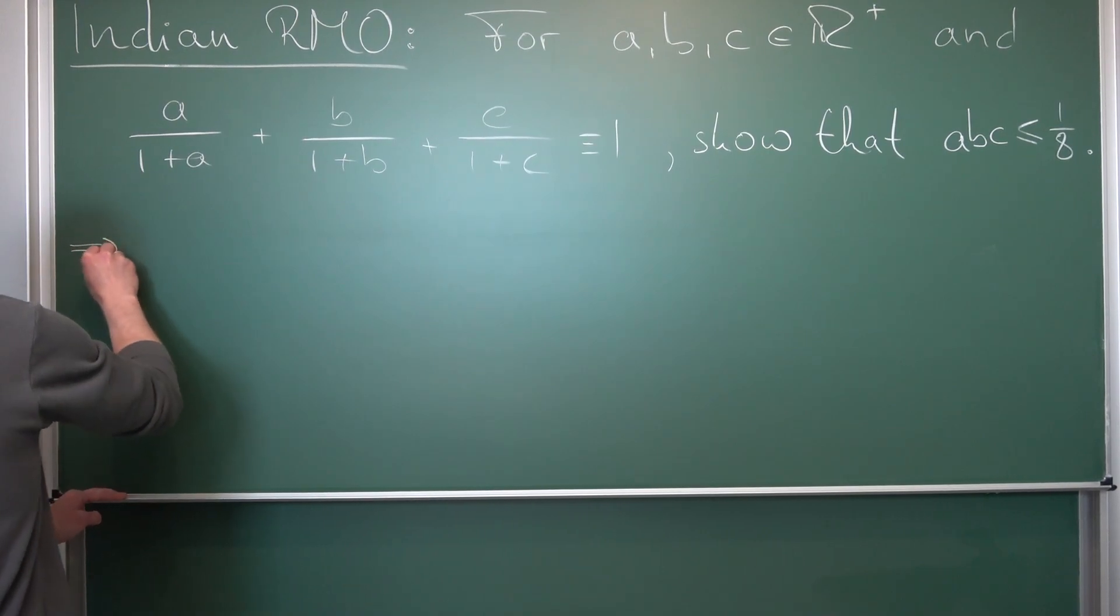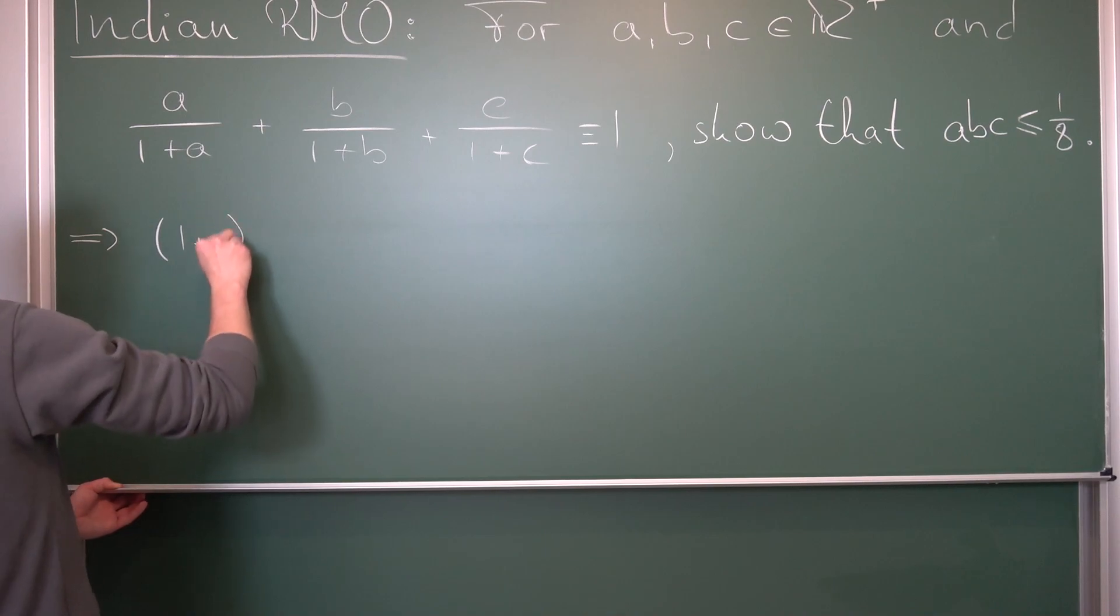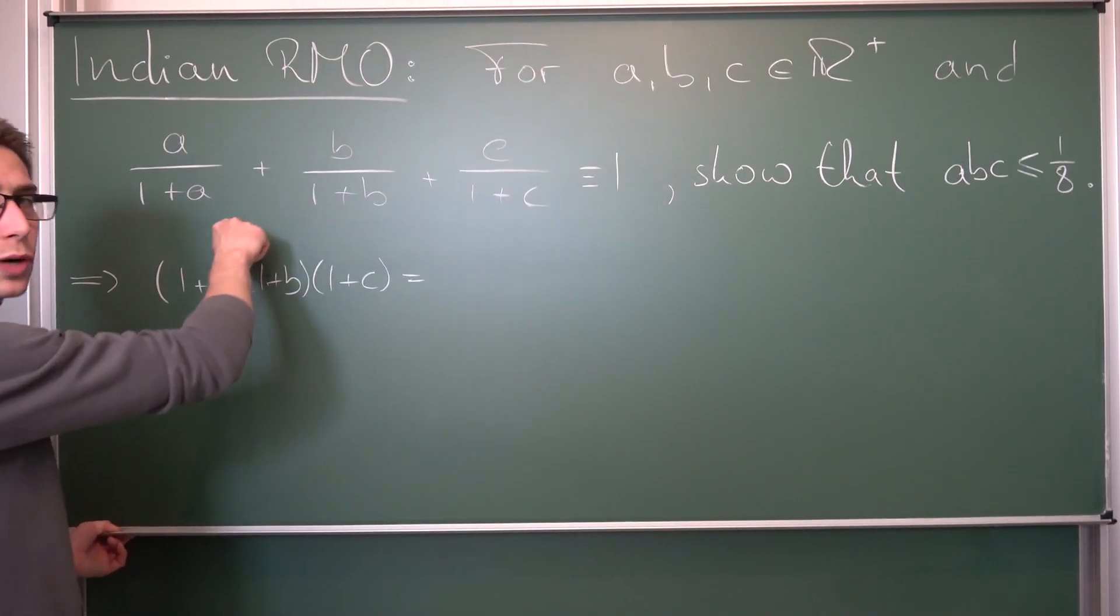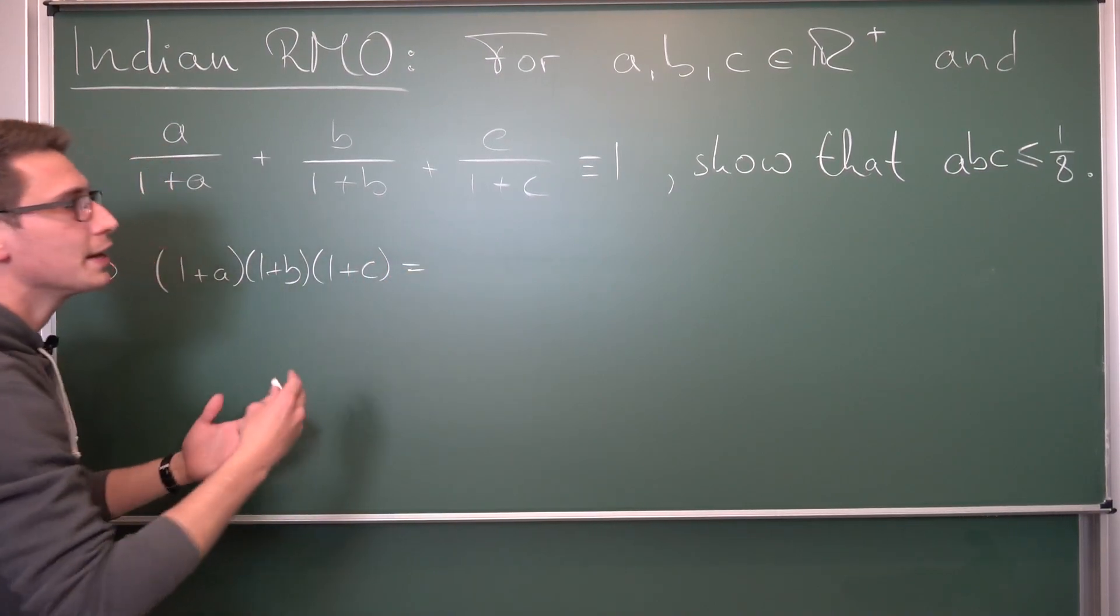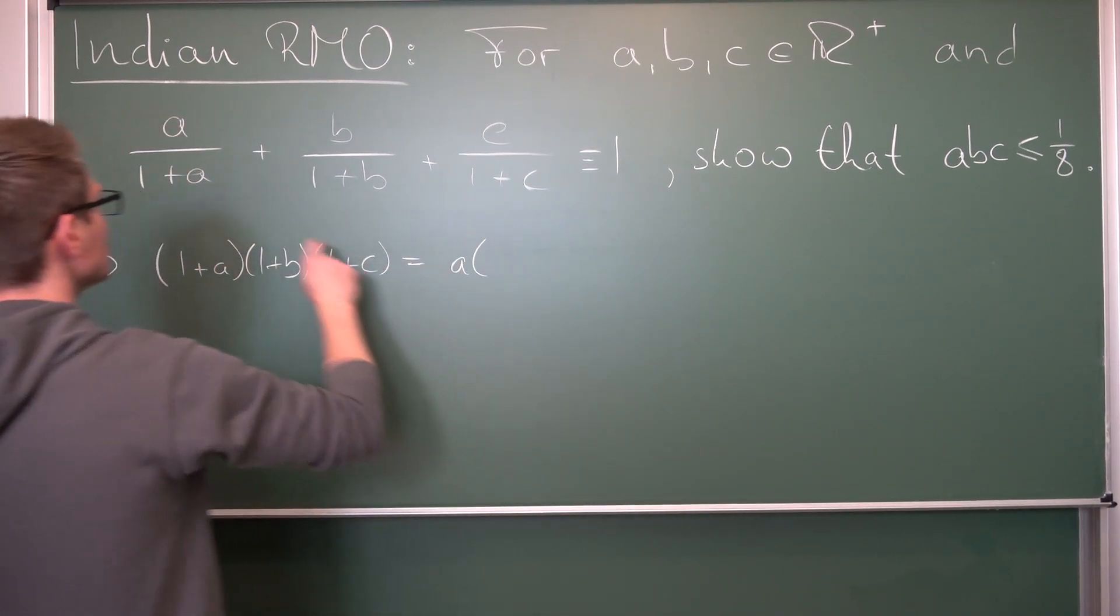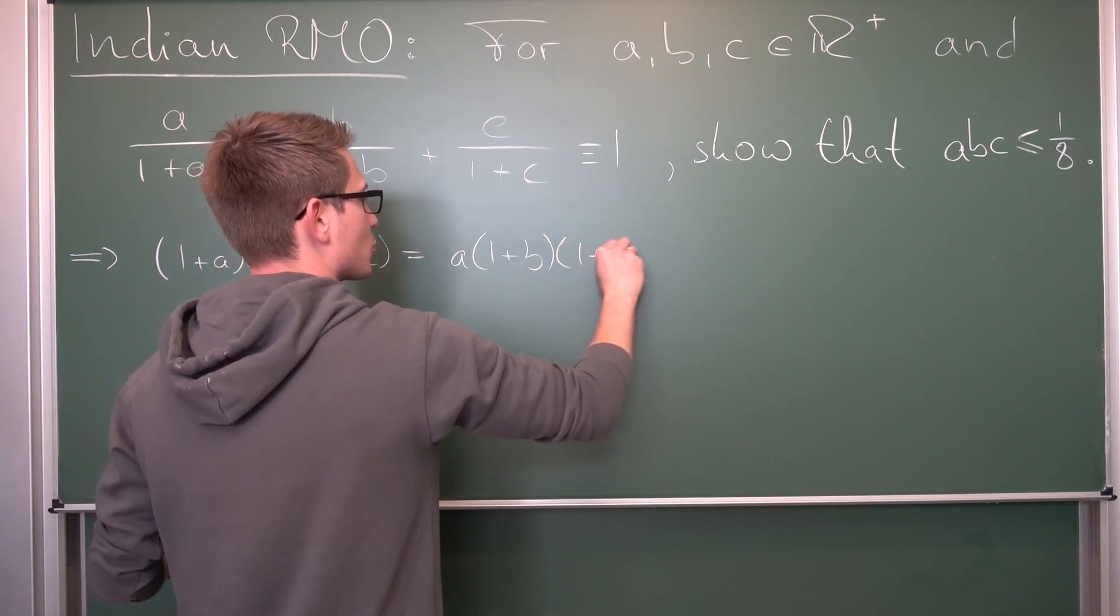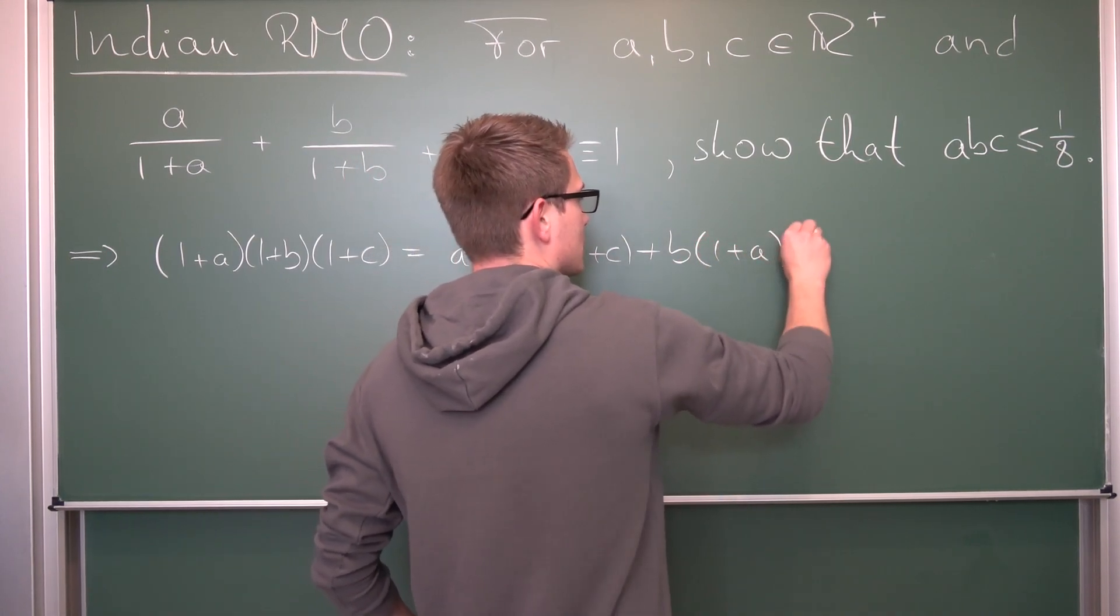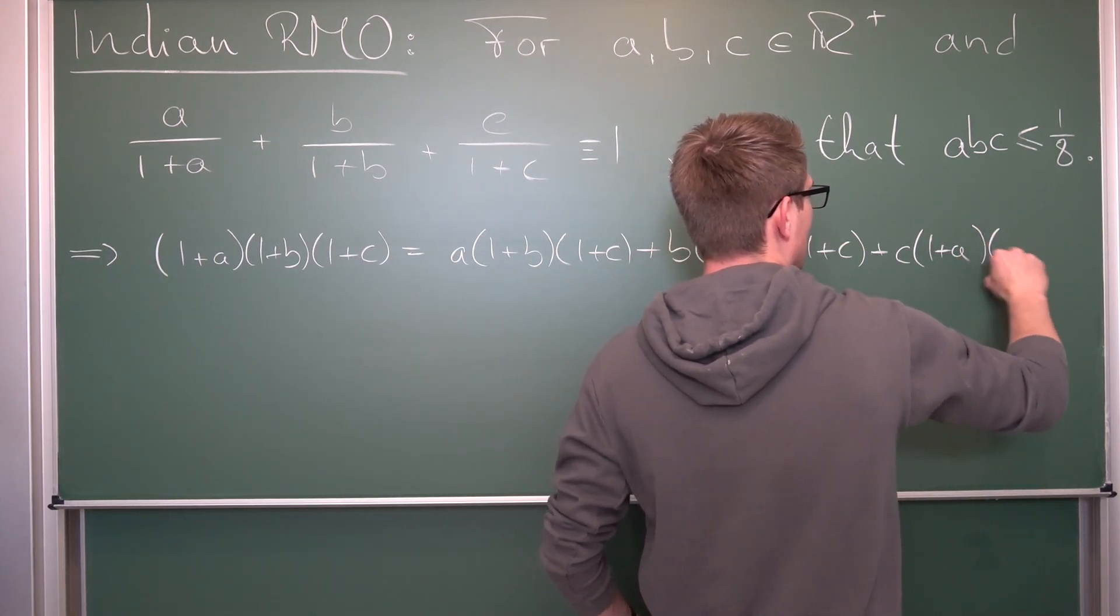What we are going to be left with is, on the left hand side, we are going to get just a product of the three. So (1+a) times (1+b) times (1+c). And obviously on the right hand side, the factor of (1+a) is going to cancel out on the first one, (1+b) is going to cancel out on the second one, etc. Leaving us on the other side with a times (1+b) times (1+c) plus b times (1+a) times (1+c) plus c times (1+a) times (1+b).